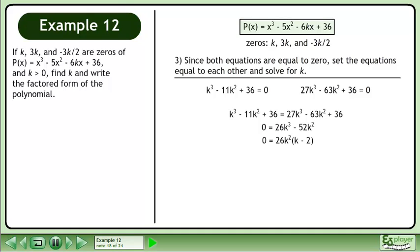Factor out 26k² to get 26k²(k - 2). The solution is k = 0 or k = 2. The question specifies that k is greater than 0, so reject 0 as a solution for k.